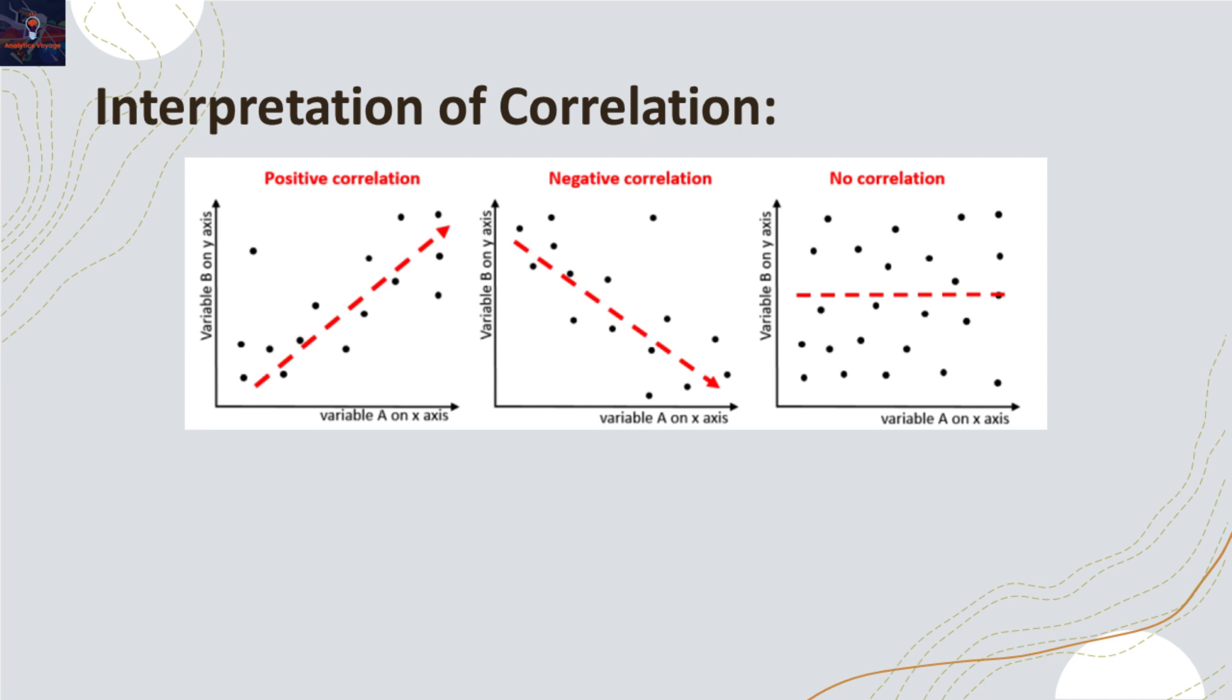Moving on to the third chart, it illustrates no apparent correlation between the variables on the x-axis and y-axis. We can observe that there is no clear trend or pattern in the values as the data points are scattered randomly.